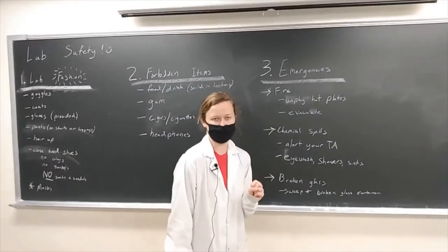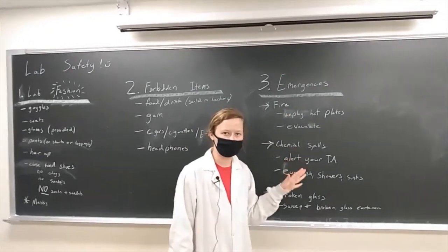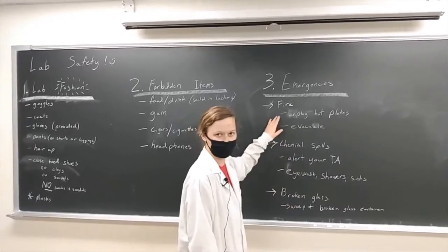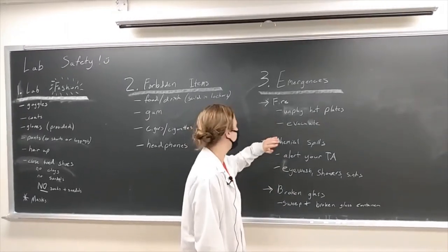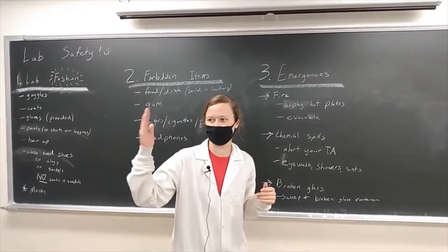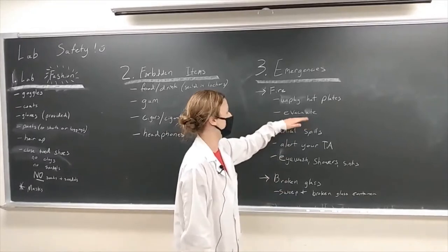Finally, let's talk a little bit about emergency protocols. In the case of a small fire, you can flag your TA, ask them to come over and they might be able to put it out pretty quickly. If you're not sure, or if it's a large fire, immediately turn off all the hot plates. Just walk around and unplug them so your TA can see from the doorway that all the hot plates are turned off, and then immediately evacuate the building.